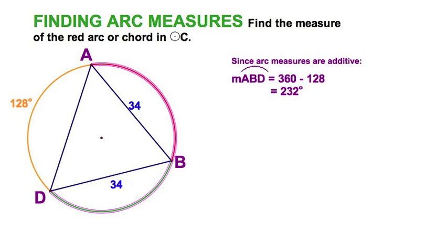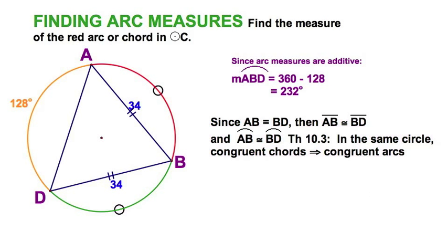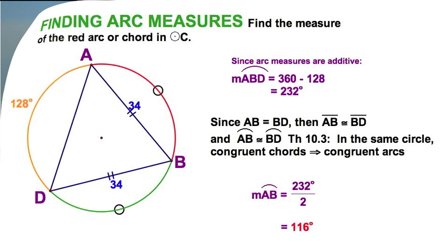That would be the major arc, ABD. And I know that 34 and 34 are the same. So, equal measures makes the segments congruent. And if these segments are congruent, then by our most recent theorem, I know my two arcs are congruent as well. And then I can find the measures simply by dividing by two. And we're done.